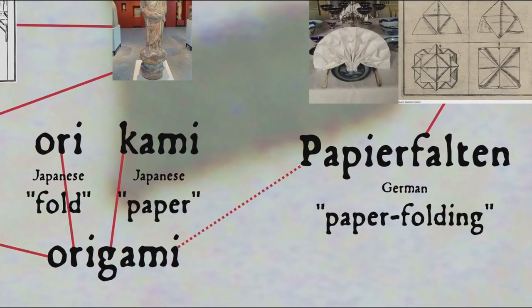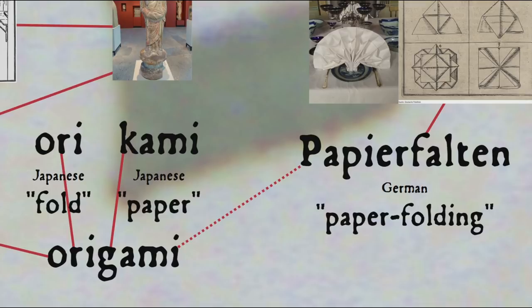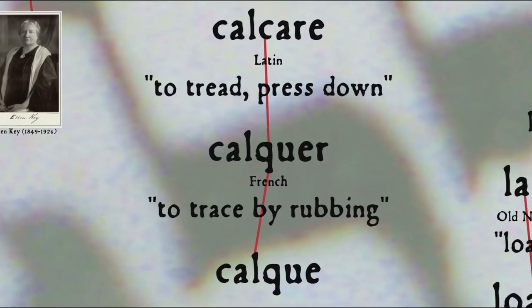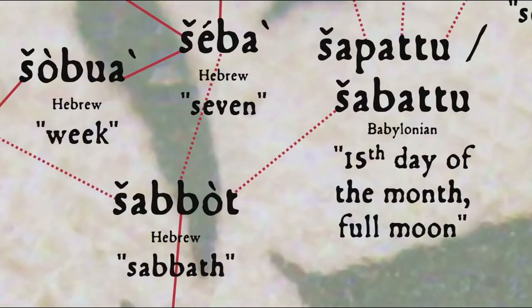The word origami was later reintroduced in the 19th century as a sort of calque, or loan translation, of the German word Papierfalten, literally 'paper folding,' and thus became the catch-all term for decorative paper folding in Japan. A calque — from French calque, 'to trace by rubbing,' itself from Latin calcare, 'to tread, press down' — is when a compound word or phrase is translated element by element from one language into another, as opposed to a loanword or borrowing, which is when a whole word is borrowed from one language into another, such as Babylonian shappatu being borrowed into Hebrew as shabbat.